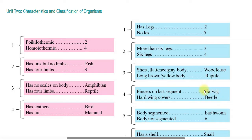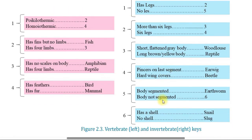Ear wings lead to key 7. Hard wing covers indicate a beetle, also at key 7. If the body is segmented it leads to key 5, while if the body is not segmented, it leads to key 6.